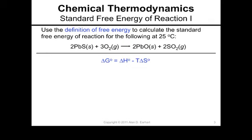In order to do this, we need to have Delta H, T, and Delta S. We calculated the standard enthalpy of reaction for this reaction earlier - it was minus 835.8 kilojoules. We also calculated the standard entropy change for this reaction - it was minus 168.8 joules per Kelvin.